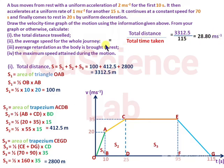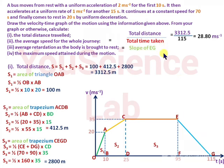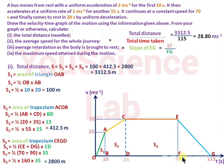Average retardation of the car equals the slope of line EG, which is EF over FG. That is 35 over 20, giving 1.75 meters per second squared.